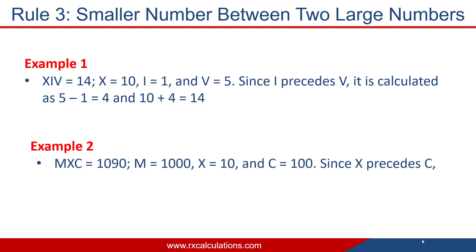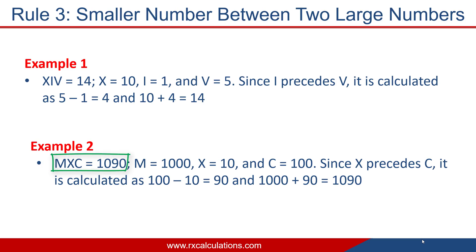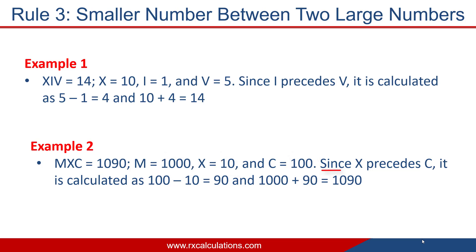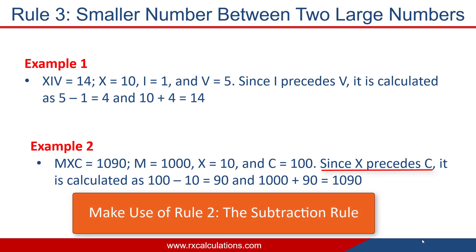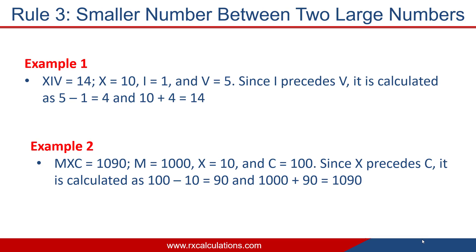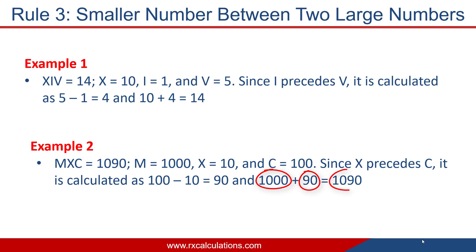Another example: MXC equals 1090 in Arabic numbers. M = 1000, X = 10, C = 100. X is smaller than both 1000 and 100, so we have a smaller number between two large numbers. Since X precedes C, apply rule 2: 100 − 10 = 90. Now 90 is to the right of 1000, so apply rule 1: 1000 + 90 = 1090.